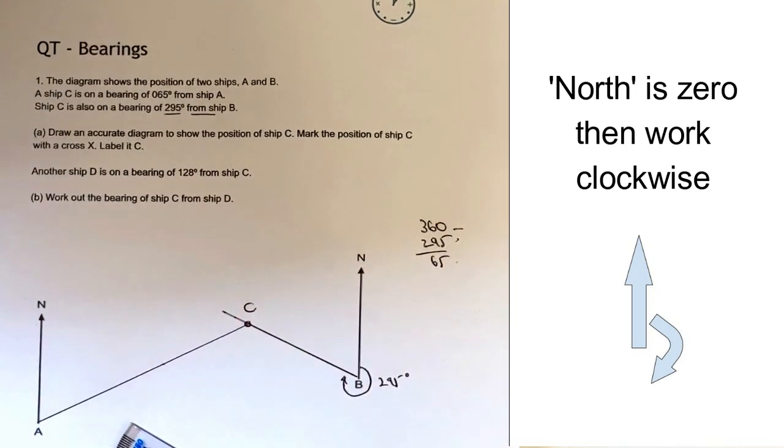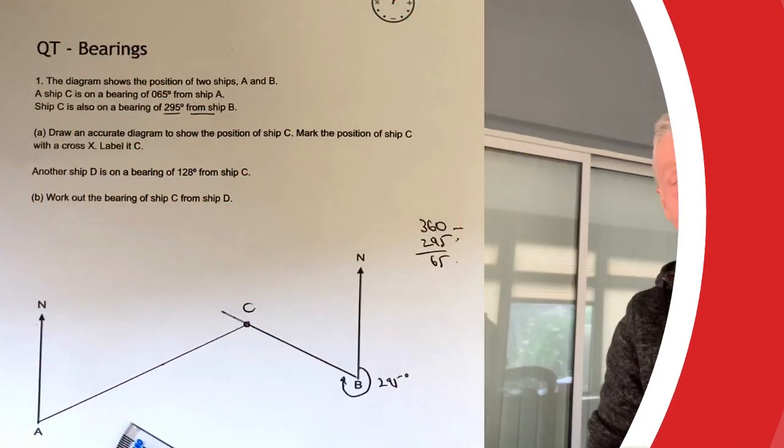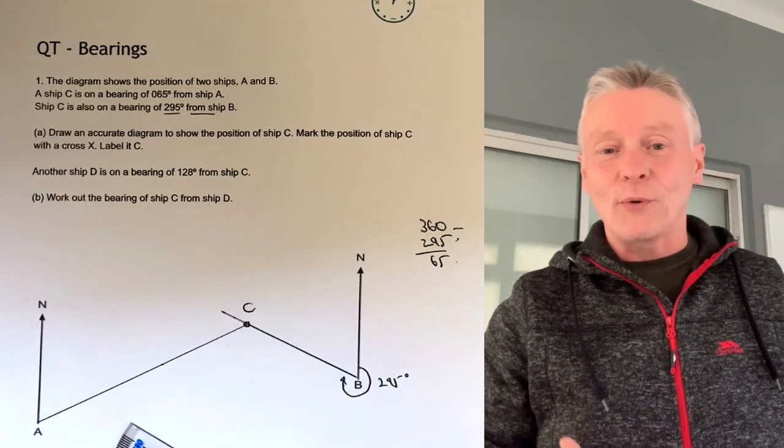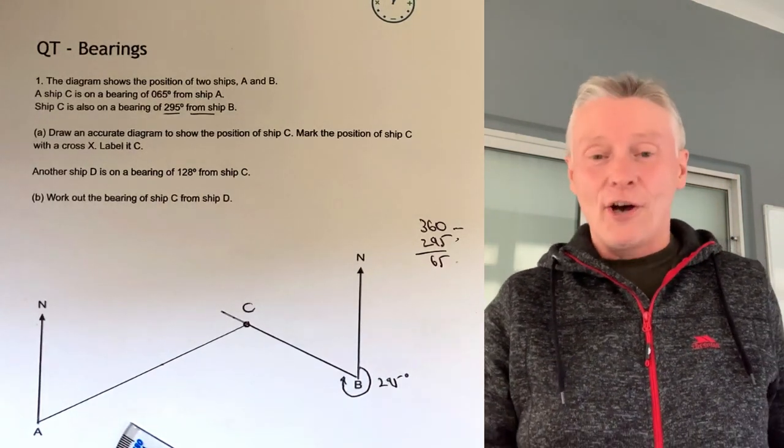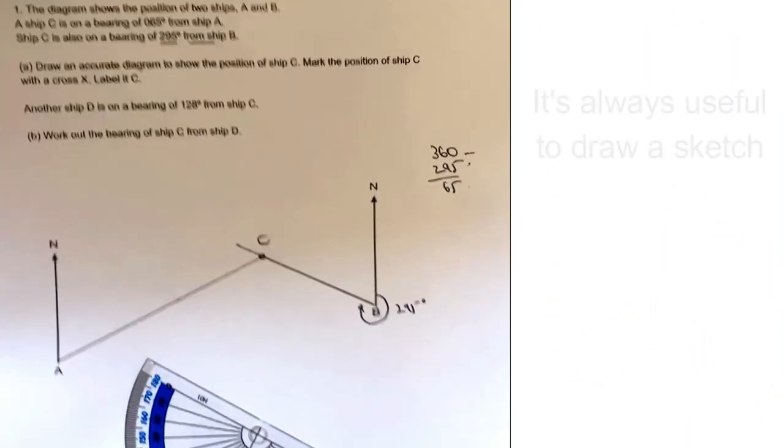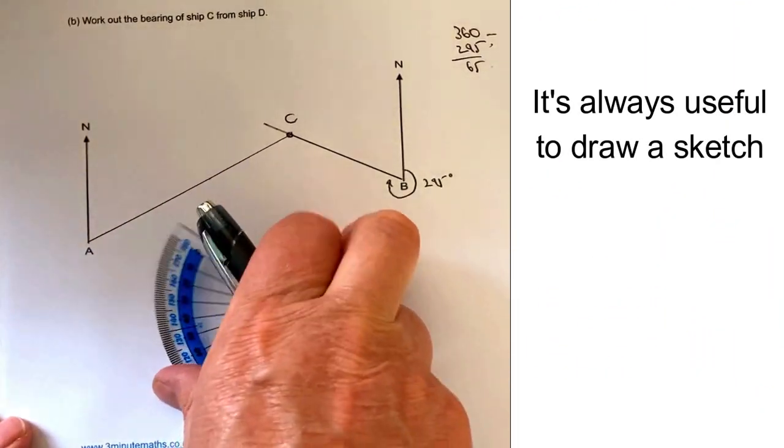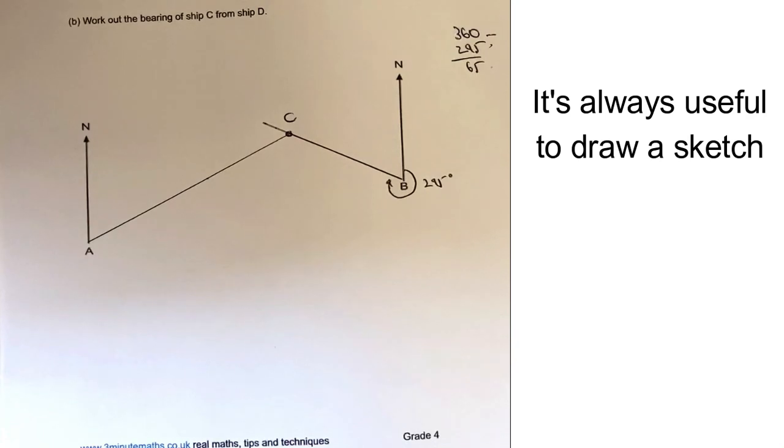That would be the answer to that particular question. Let's move on then to part B of the first question. In part B we're talking a little bit of information that another ship D is on a bearing of 128 degrees from ship C.